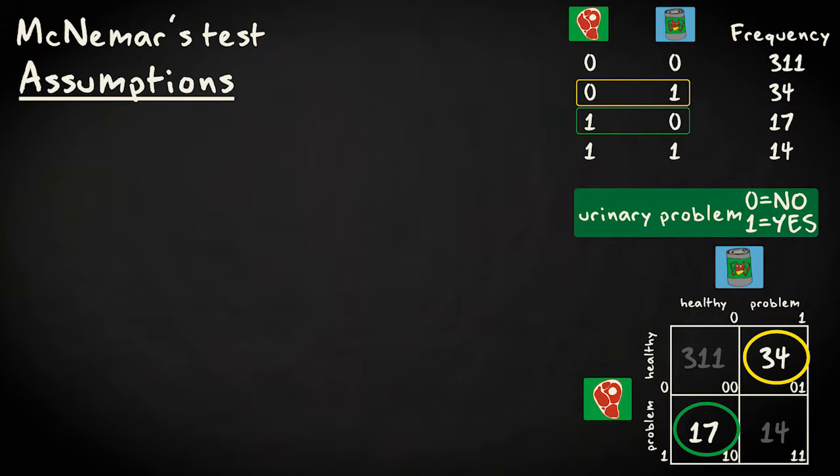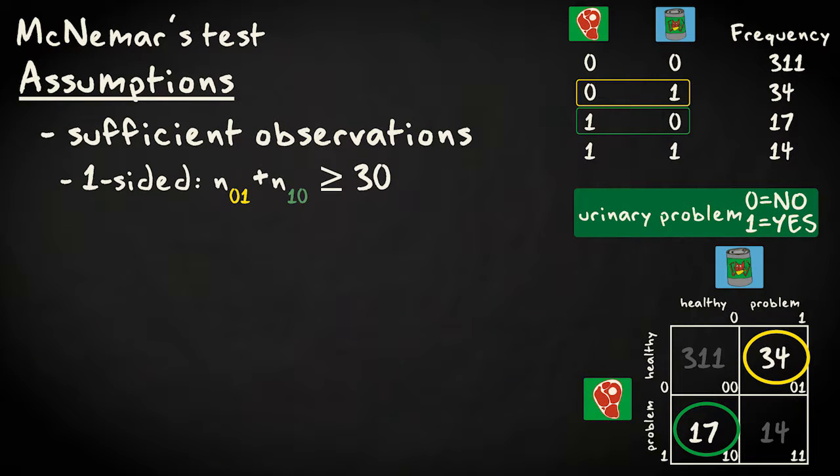To perform McNemar's test, we need to have a sufficient number of observations. For one-sided tests, the sum of the inconsistent cases should be at least 30. Two-sided tests work well even for small samples. No additional assumptions are required.